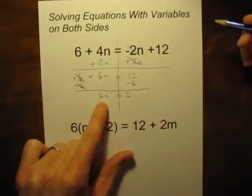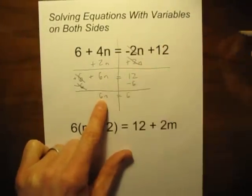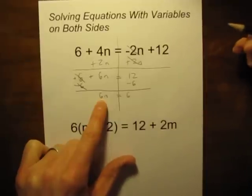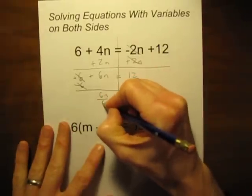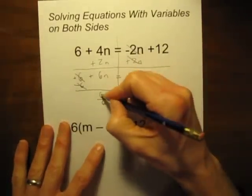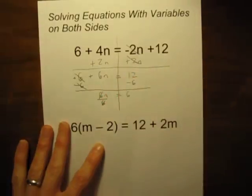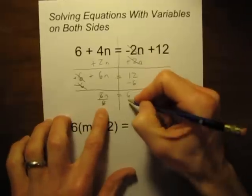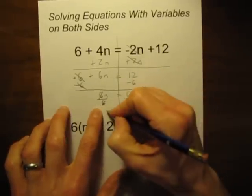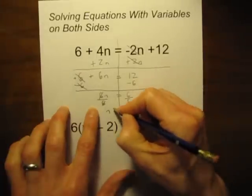Now let's do 6 times n is equal to 6. How can we get rid of this times 6? The opposite of times 6 is, of course, divided by 6. The opposite of multiplication is division. 6 divided by 6 is 1, so they cancel. But if we divide this side by 6, we had better divide the right hand by 6 as well. So we're left with n is equal to 6 divided by 6 is 1.